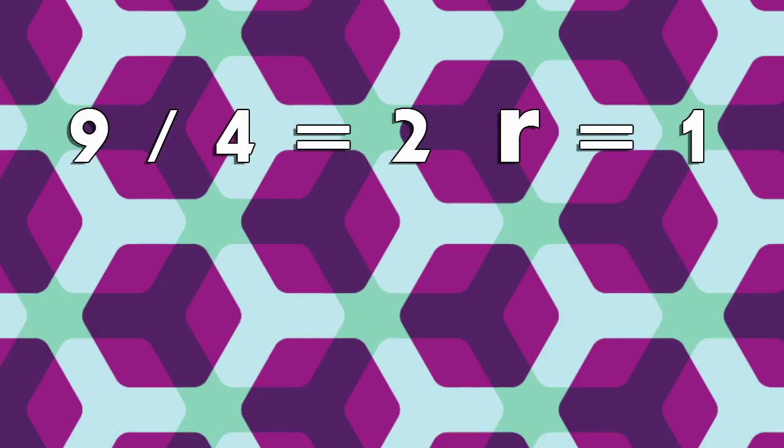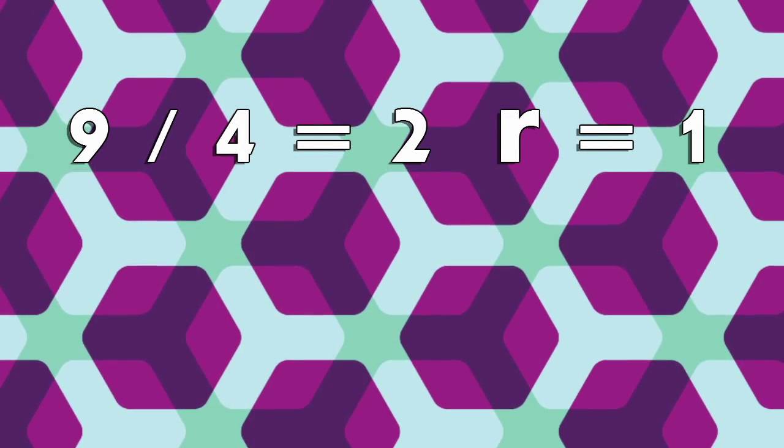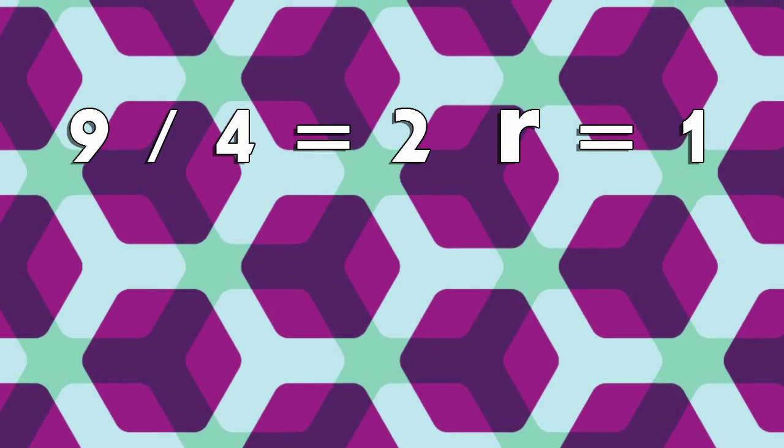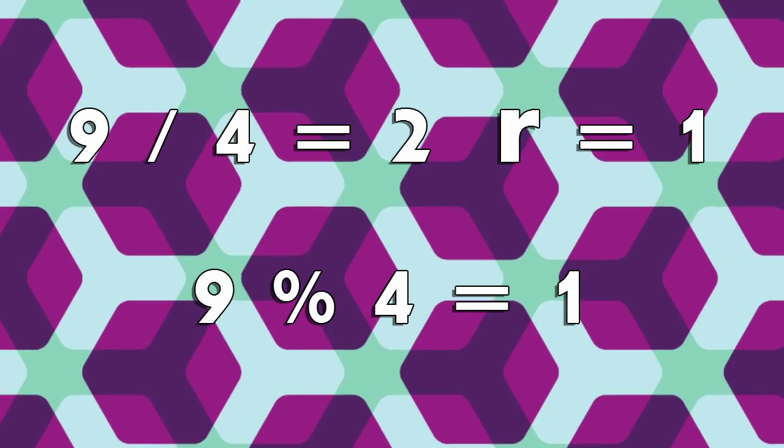And modulus. You might not have heard about the modulus operator before, but it just means taking the remainder of two numbers after you divide them. For example, 9 divided by 4 gives a remainder of 1, so 9 modulus 4 equals 1.